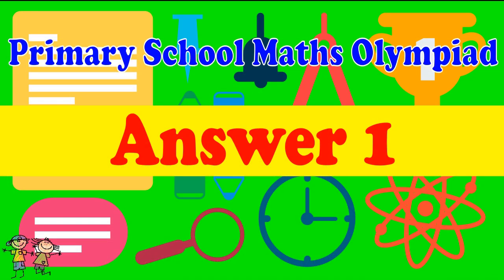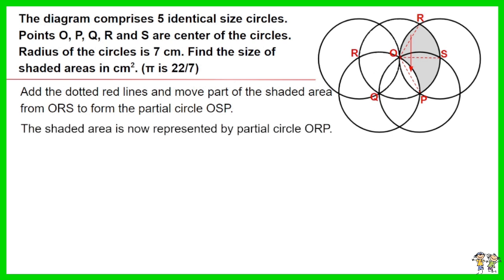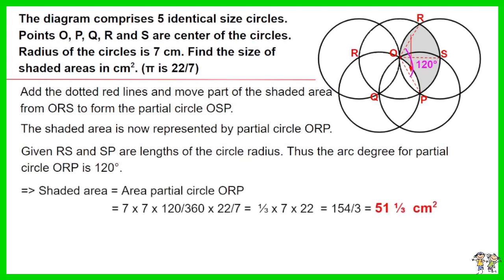Answer for Question 1. Add the dotted red lines and move part of the shaded area from ORS to form a partial circle OSP. The shaded area is now represented by the partial circle ORP. Given RS and SP are lengths of the circle radius, the arc degree for the partial circle ORP is 120 degrees. Area of partial circle ORP = 7 × 7 × (120/360) × π. The answer is 51 and one-third cm².